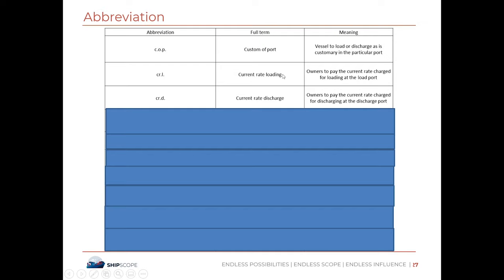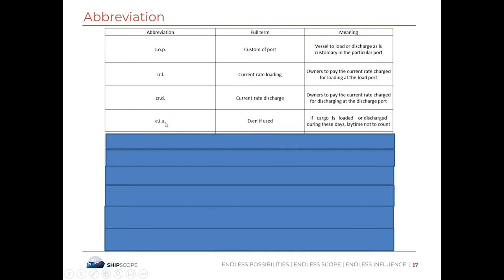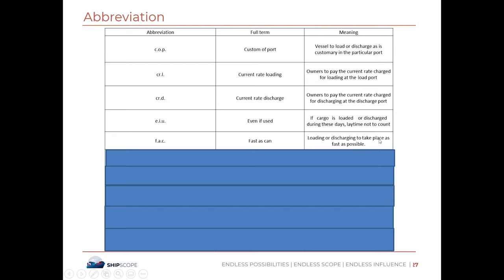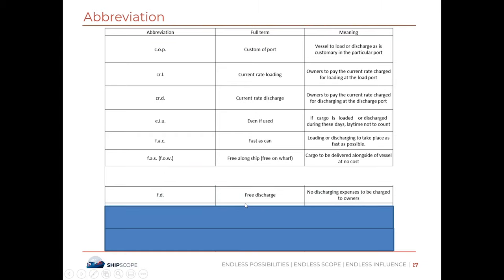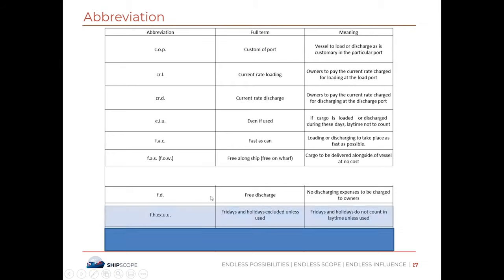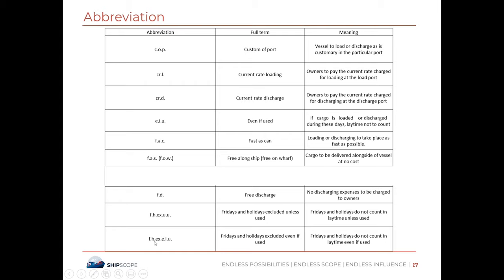EIU means 'Even If Used' — if cargo is loaded or discharged during these days, laytime does not count. FAC is 'Fast As Can' — loading and/or discharging to take place as fast as possible. FA is Free Alongside. FD is Free Discharge — no discharge expenses charged to owners. FHEX UU means 'Fridays and Holidays Excluded Unless Used' — Fridays and holidays do not count in laytime unless used. FHEX EIU means 'Fridays and Holidays Excluded Even If Used.'